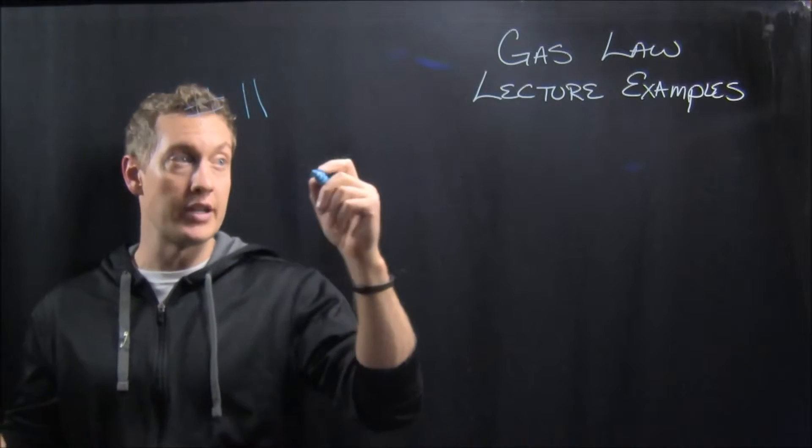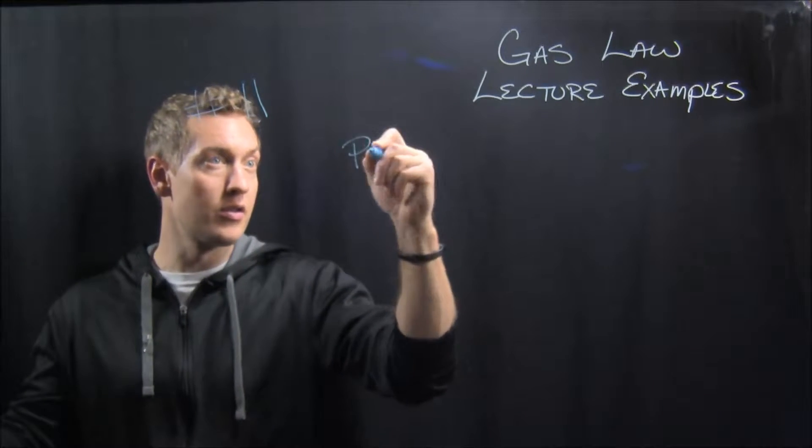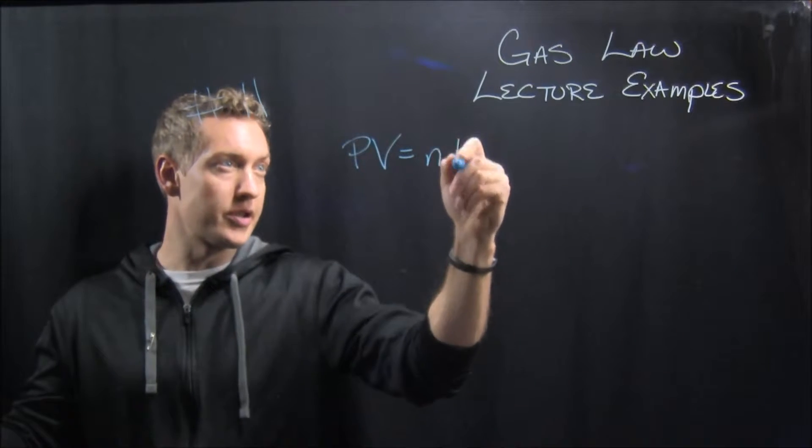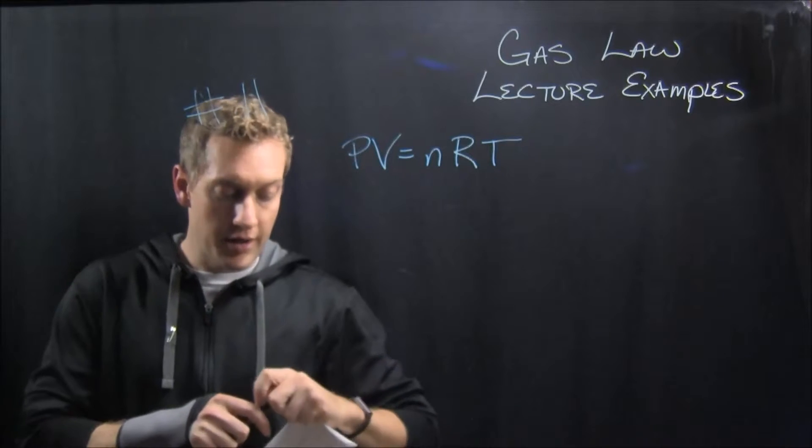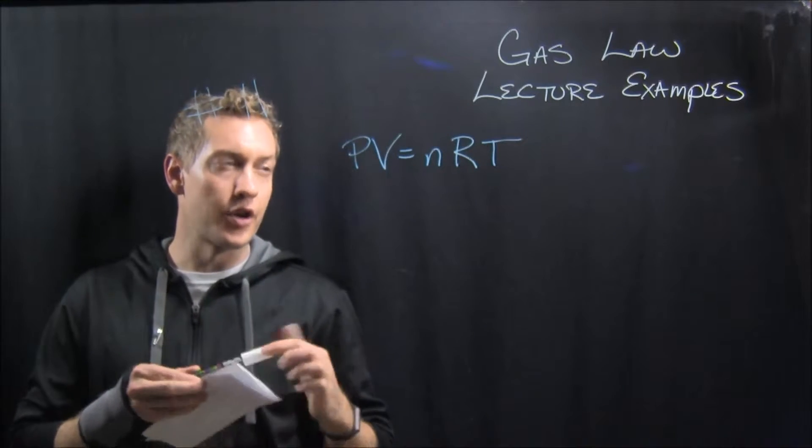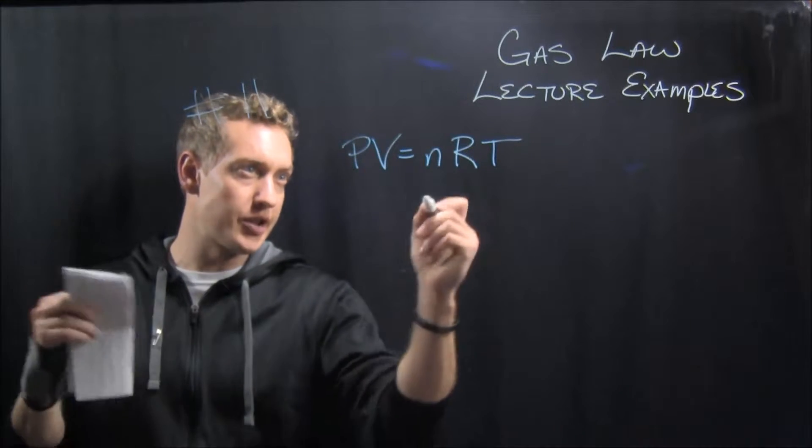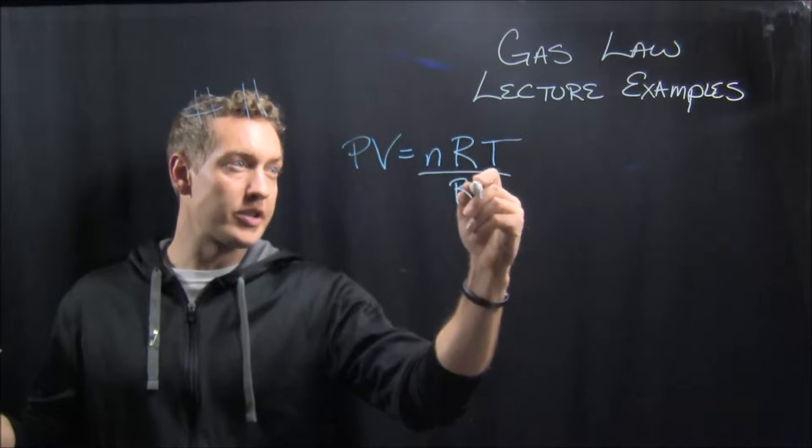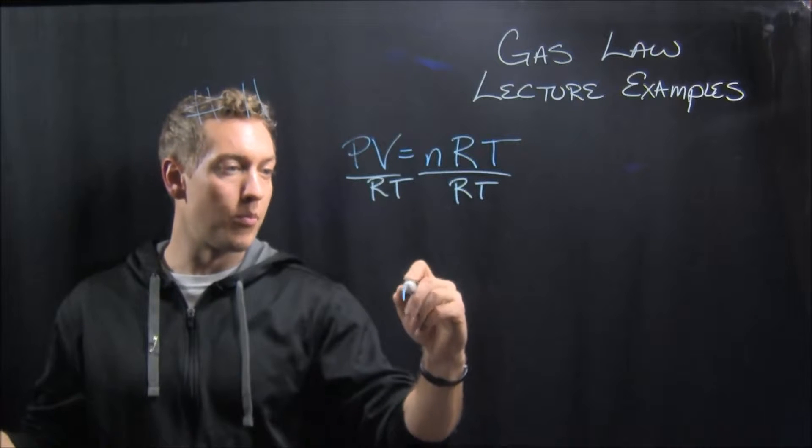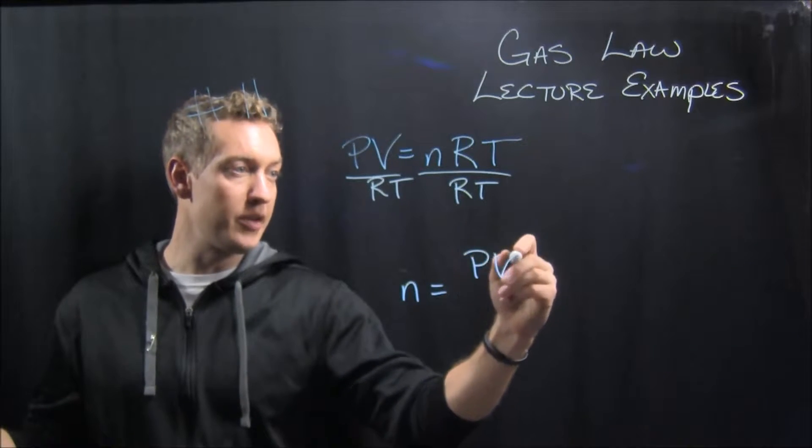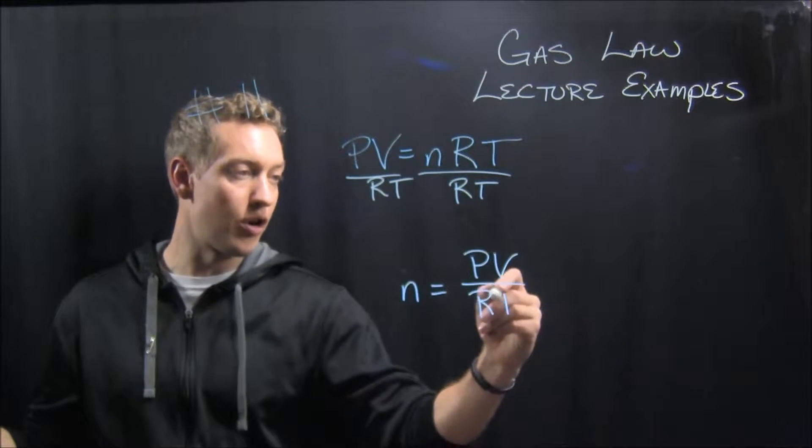So my mind jumps right to PV equals nRT. And if we're going to solve for moles, we're going to rearrange this. So we'll divide by RT on each side, and we end up with moles equals PV over RT.